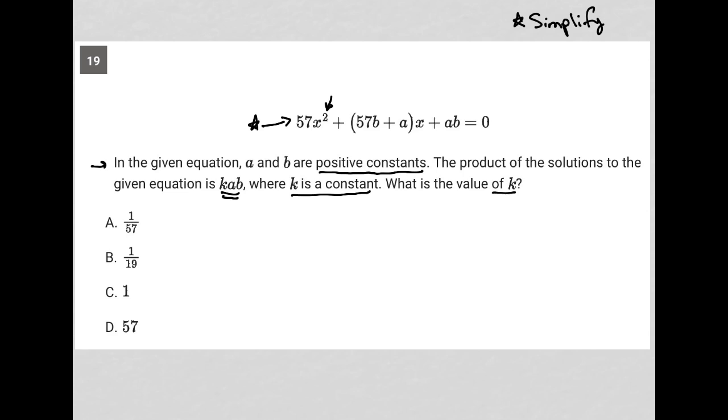So I'm going to rewrite the original equation, 57X squared plus parentheses 57B plus A times X plus AB is equal to zero. The 57X squared cannot be simplified, so that comes down.